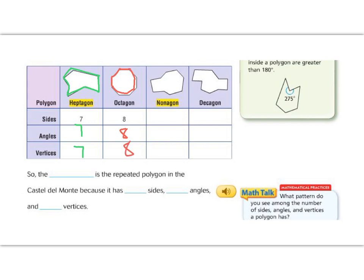Our next new vocabulary word is a nonagon. A nonagon has nine sides, nine angles, and nine vertices. And our last shape is the decagon. The decagon has one, two, three, four, five, six, seven, eight, nine, ten sides. It has ten sides, ten angles, and ten vertices.